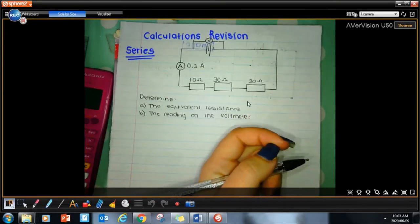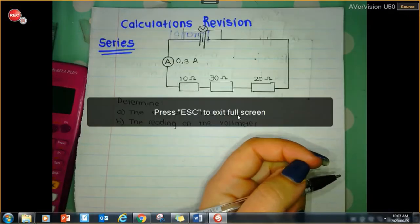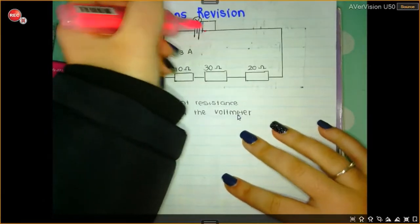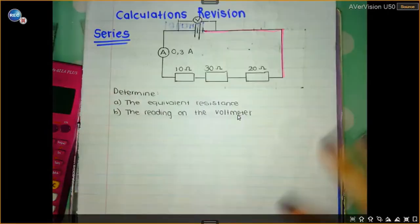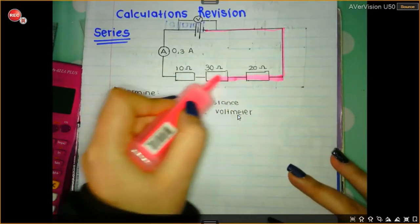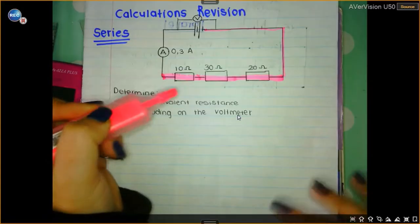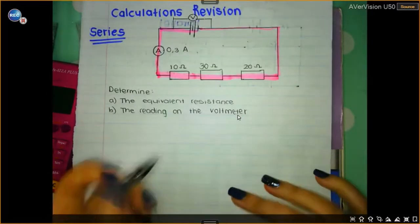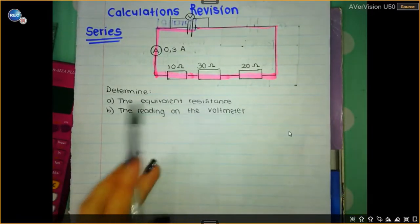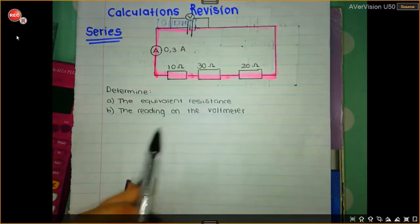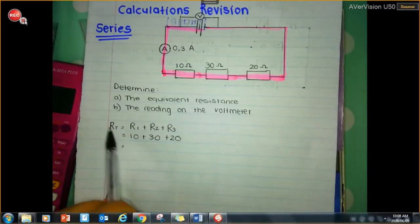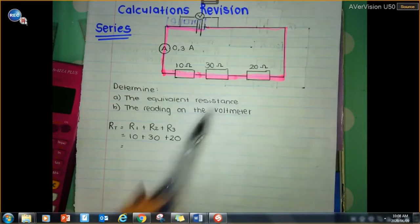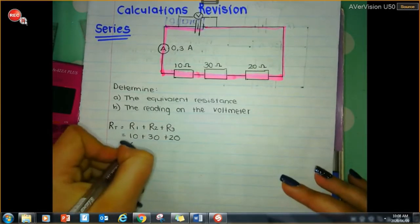I've given you a circuit here. It's a series circuit. How do I know it's a series circuit? Because if I am current and I'm flowing, all the current has to flow through the 20 ohm, 30 ohm, and 10 ohm resistors — all the current has to flow through all the resistors. So we know that it is a series circuit. To determine the equivalent resistance in series: the total resistance is equal to R1 plus R2 plus R3. So 10 plus 30 plus 20 is 60 ohms.